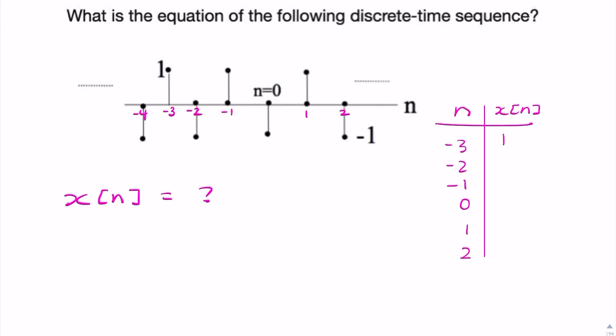So it looks like it's alternating 1, minus 1, 1, minus 1, 1, minus 1.